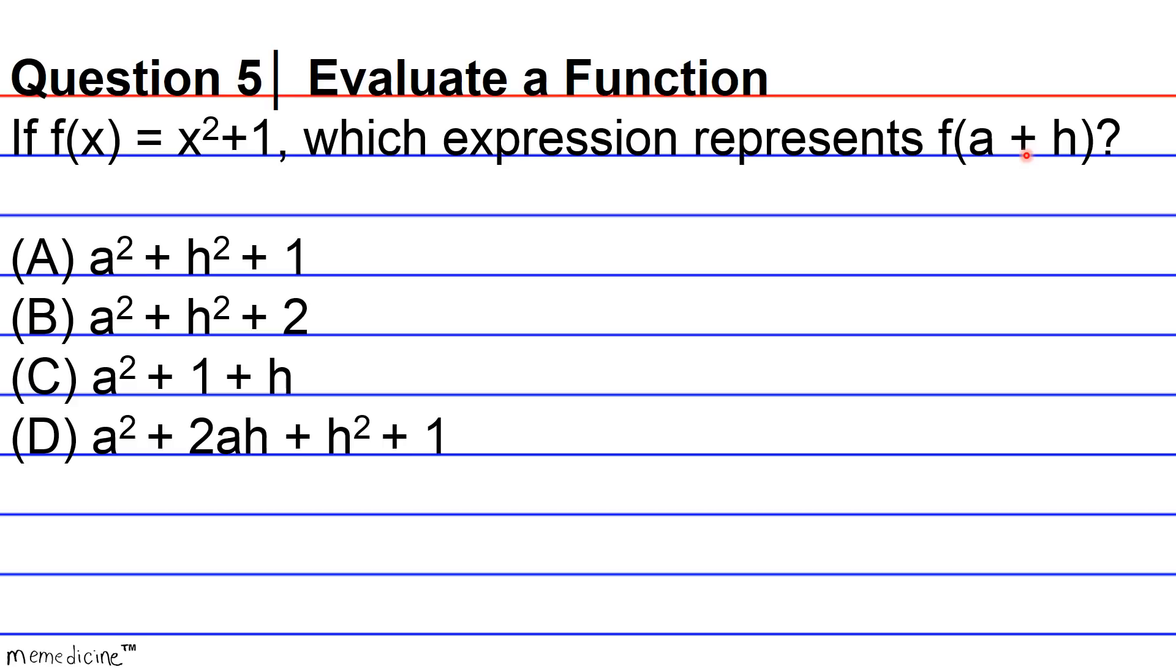So, in this problem, f of A plus H is equivalent to A plus H squared plus 1. Again, because we substituted A plus H in for x. But since this is not one of the choices, we're going to have to go ahead and multiply this square term.